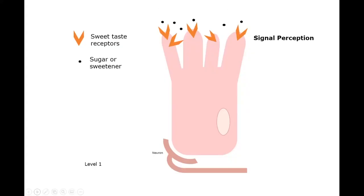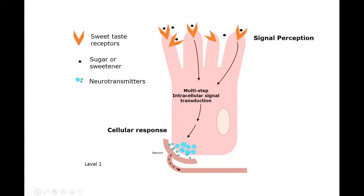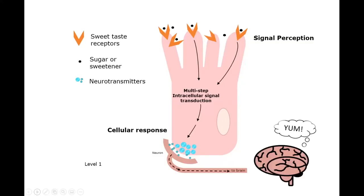So when you eat or drink something sweet or that has sugar in it or any sort of sweetener, these sugars or sweeteners activate those sweet taste receptors. That makes the cell respond in a way that a signal is sent through the cell in a pretty complicated signal transduction pathway that ends up releasing neurotransmitters into the space between the cell and the neurons. That activates the neuron to send a signal to the brain and the brain interprets that signal as saying, yum, that was wonderfully sweet.